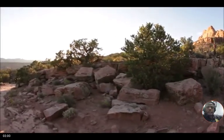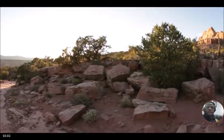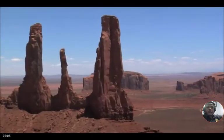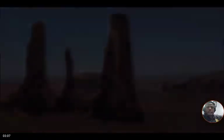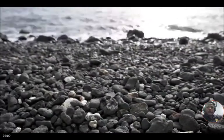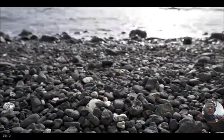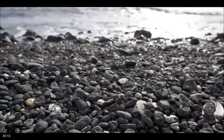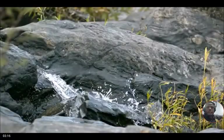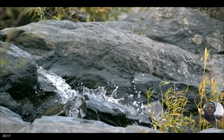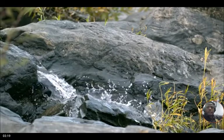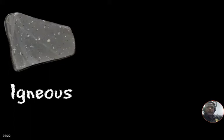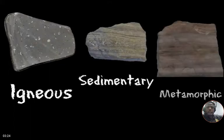Rocks are everywhere — they are large and small, heavy or light, porous or dense — but rocks in some shape or form can be found all over the planet. Different types of rocks are formed in different ways. There are three main types of rock: igneous, sedimentary, and metamorphic.